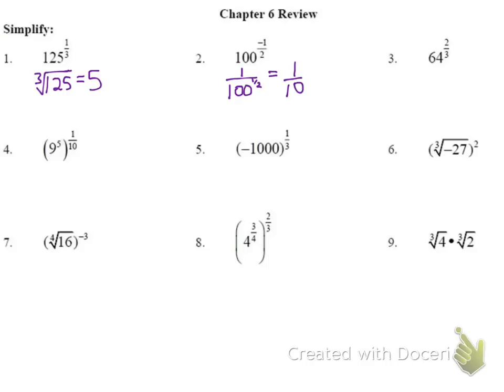Number 3: we have 64 to the 2/3. We can change this to be the cube root of 64, squared. The cube root of 64 is the number we would cube to get 64 — 4 times 4 times 4 is 64 — so we have 4 squared, and our answer is 16.